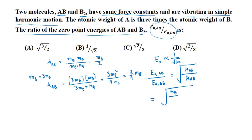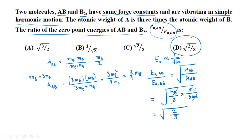Since zero-point energy is proportional to 1/sqrt(mu), the ratio E₀(AB)/E₀(B₂) = sqrt(mu_B₂ / mu_AB) = sqrt((M_B/2) / (3M_B/4)). The M_B terms cancel, giving sqrt(2/3). The right answer is choice D: the ratio is sqrt(2/3).